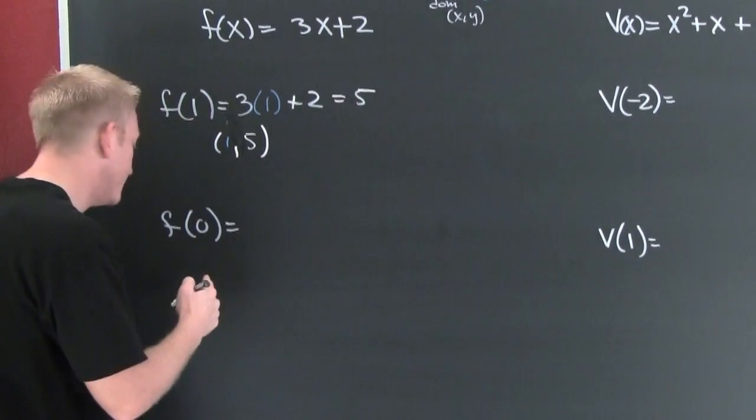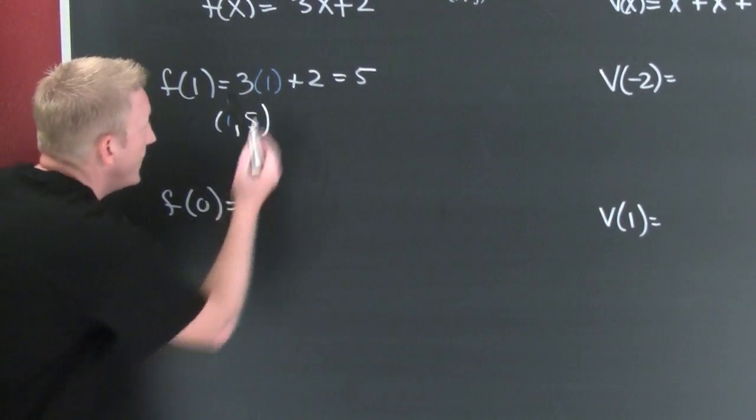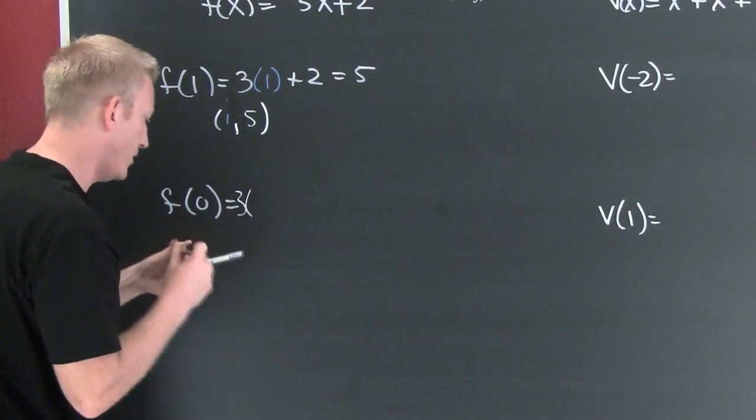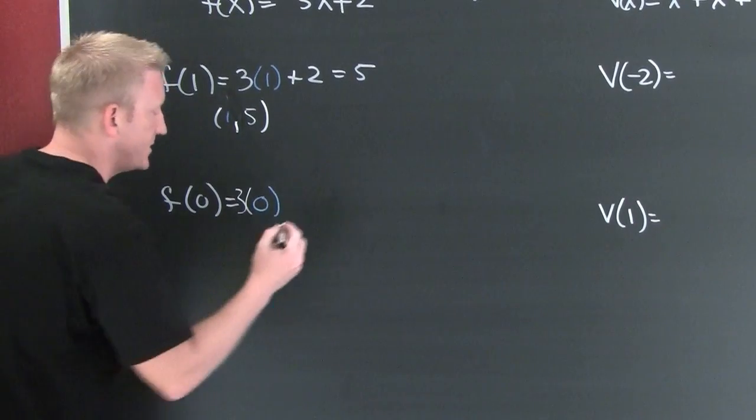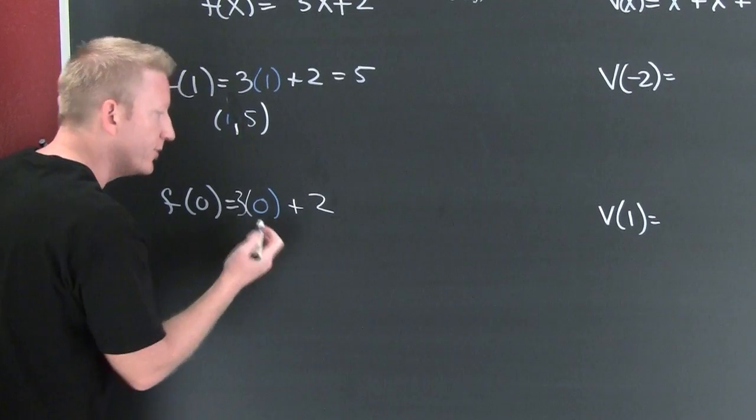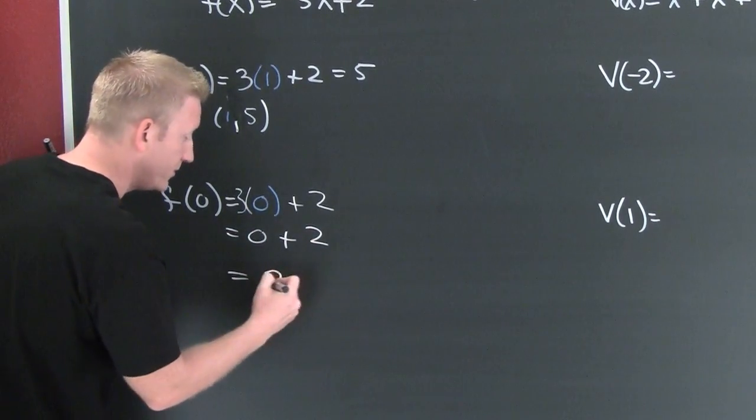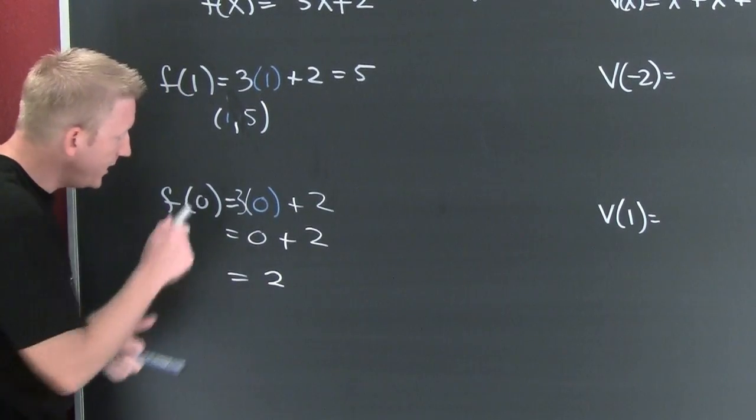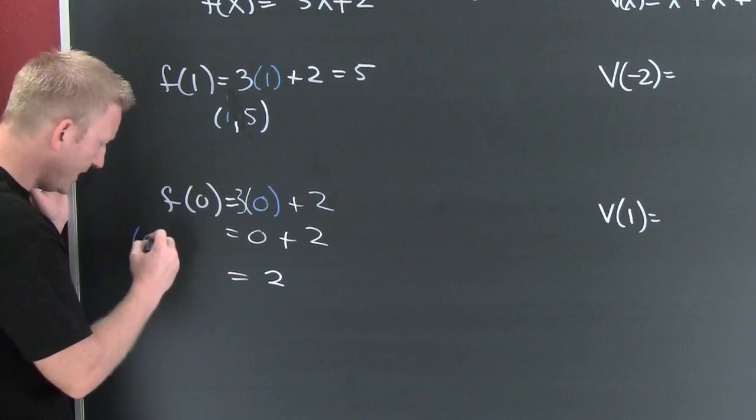Now I'm down here. Everywhere I see an x, I'm gonna put a 0. 3(0) + 2. 3 times 0 is 0 plus 2 equals 2. So my point that corresponds to this input value and output value is (0,2).